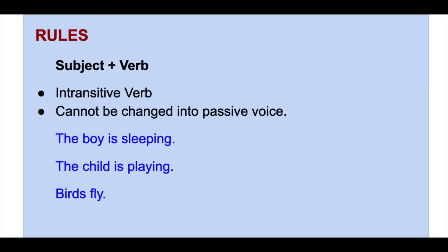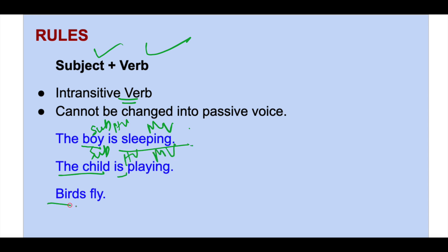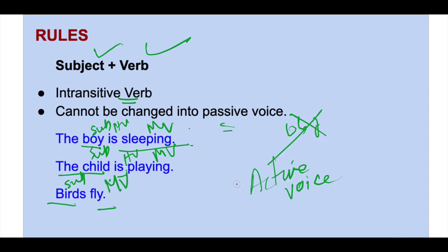Now let's see how verbs come in a sentence. With an intransitive verb you can write: subject plus verb. For example: 'The boy is sleeping' — 'the boy' is subject, 'is' is helping verb, 'sleeping' is main verb. 'Birds fly' — 'birds' is subject, 'fly' is main verb. These sentences cannot be changed to passive voice because there is no object — they always remain in active voice.